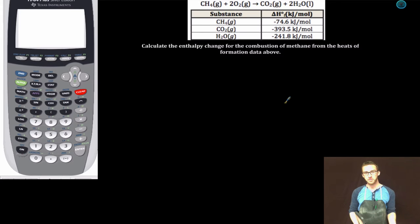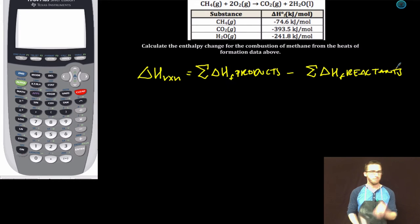As you take a look at the example in your notes, we're asked to determine the enthalpy change for the combustion of methane from the heats of formation data provided in the table. First thing I'm going to do is use my enthalpy change equation from heats of formation. Enthalpies of formation of products minus enthalpies of formation of reactants.